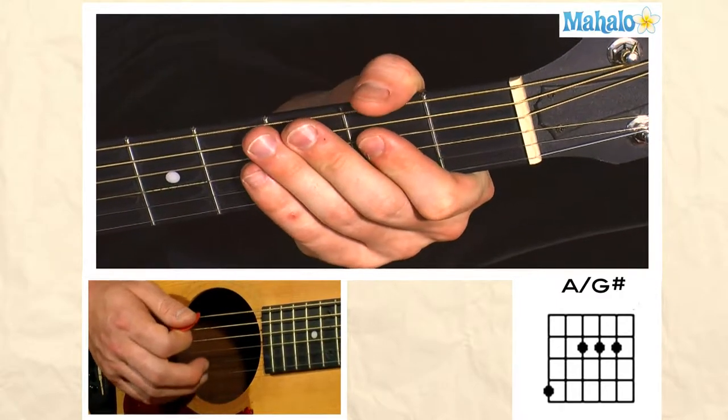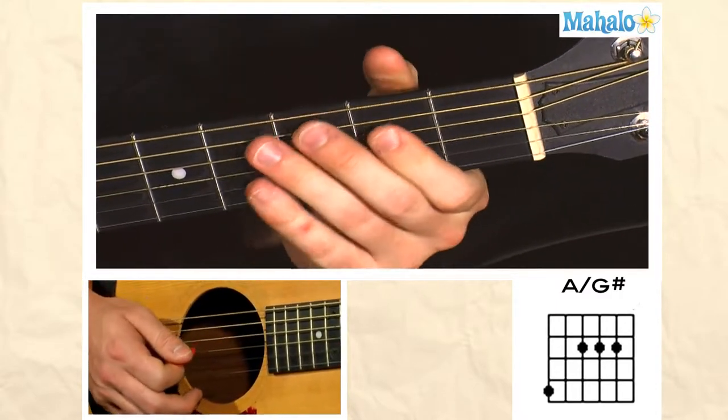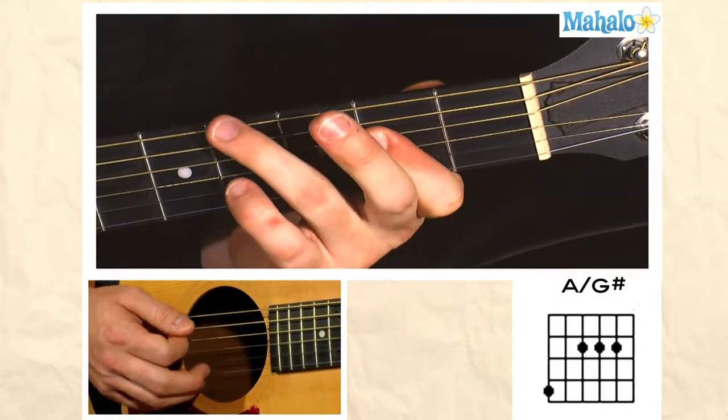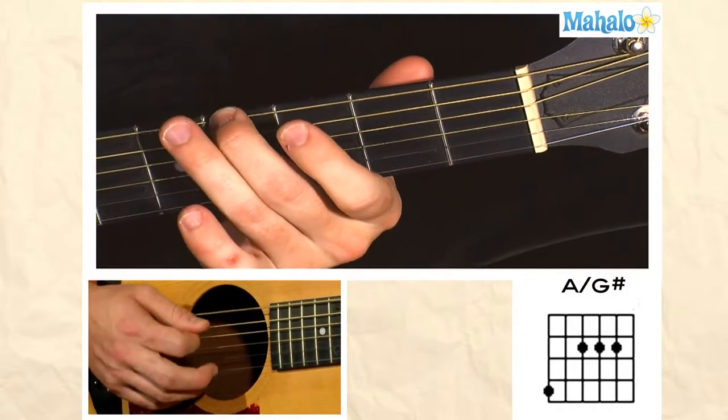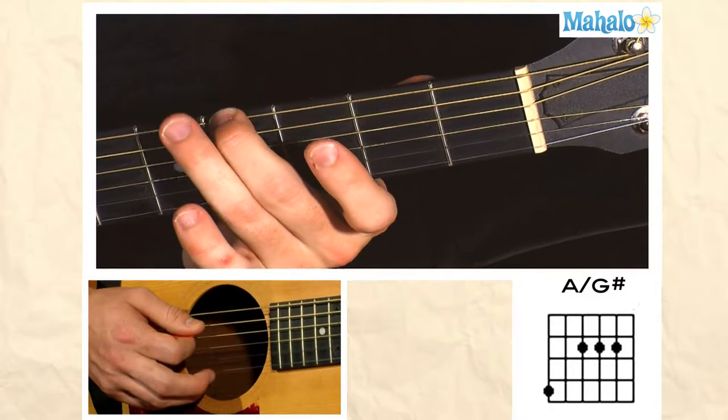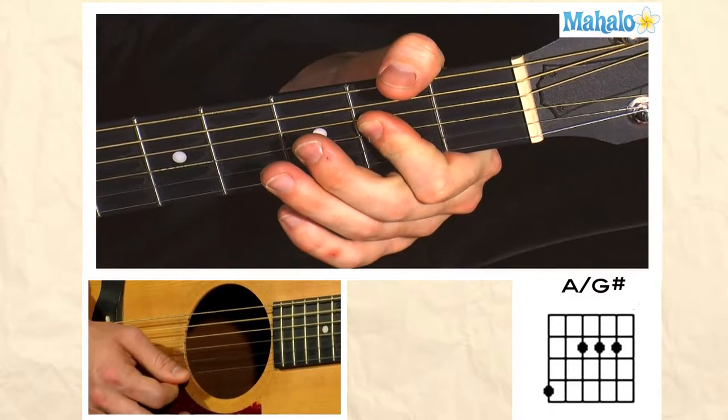I'm going to teach you A major over G sharp. The A over G sharp, and basically the G sharp is being used here on the bottom E string, and we're just going to play the A chord on top of it.